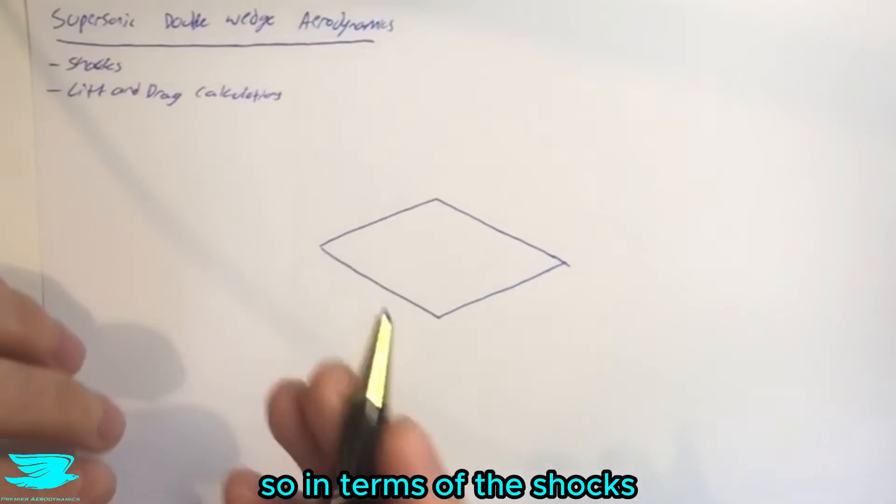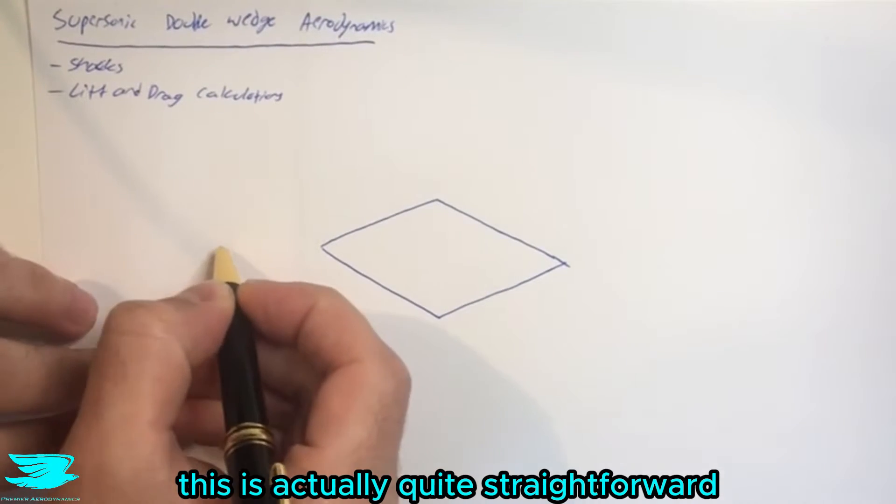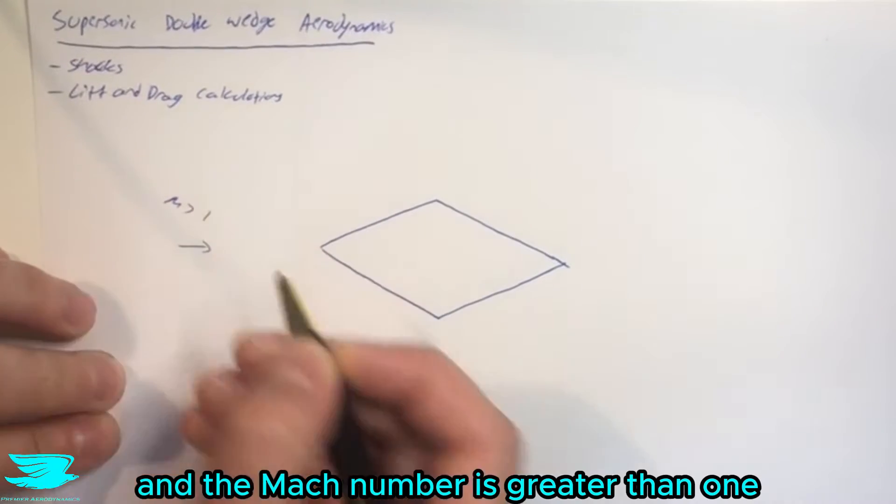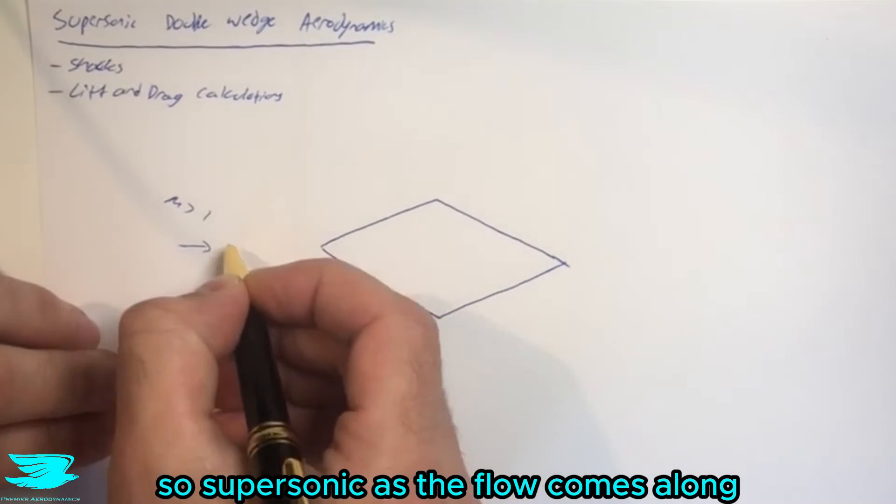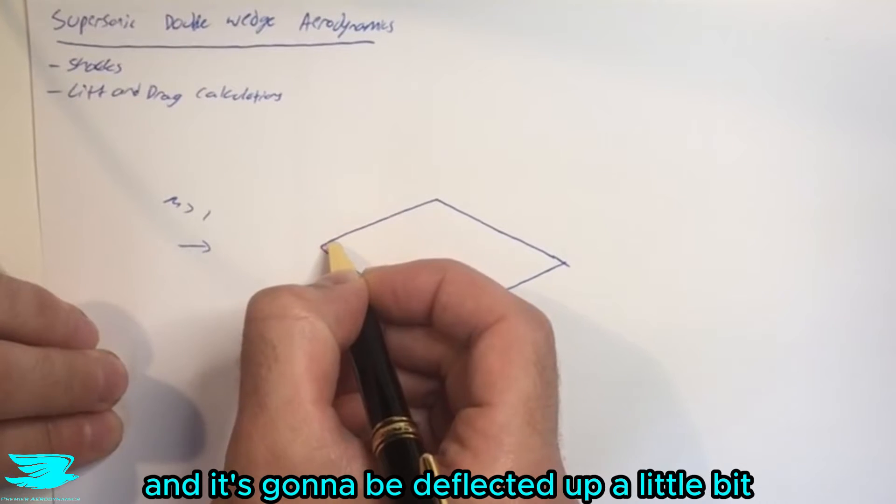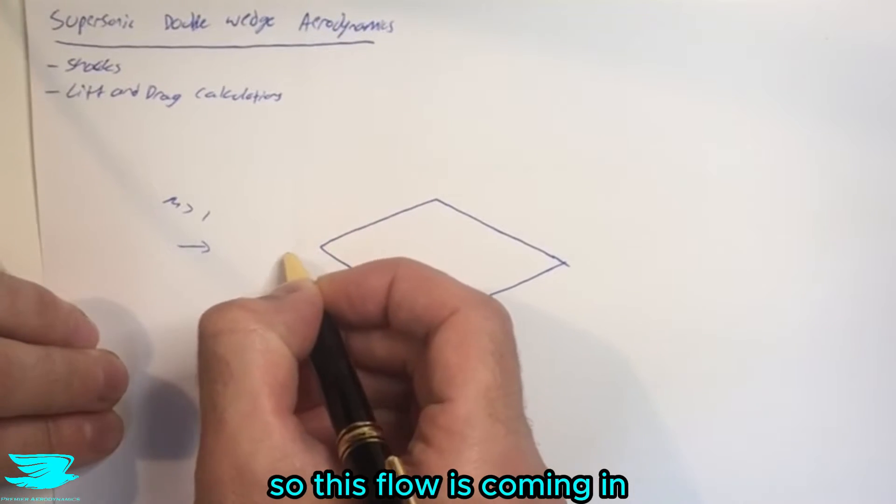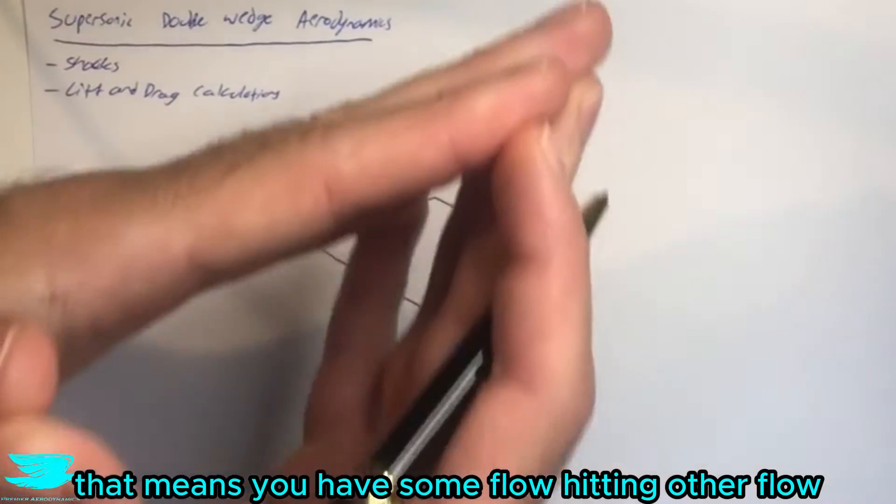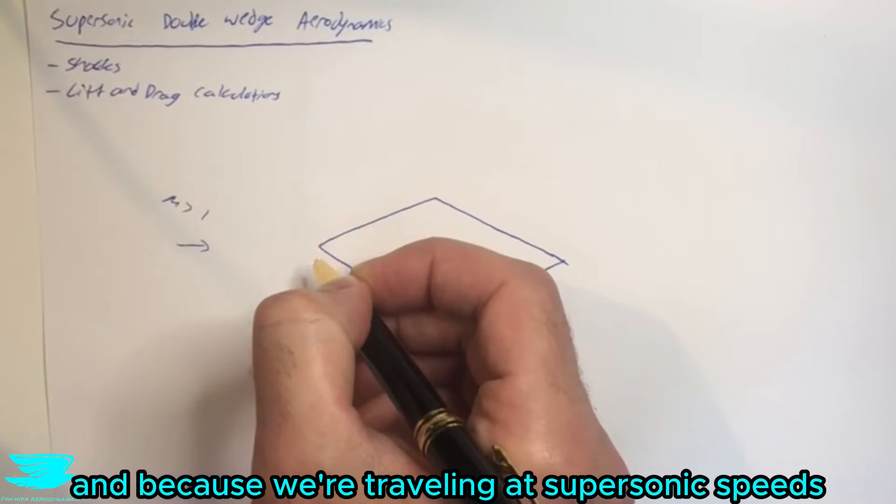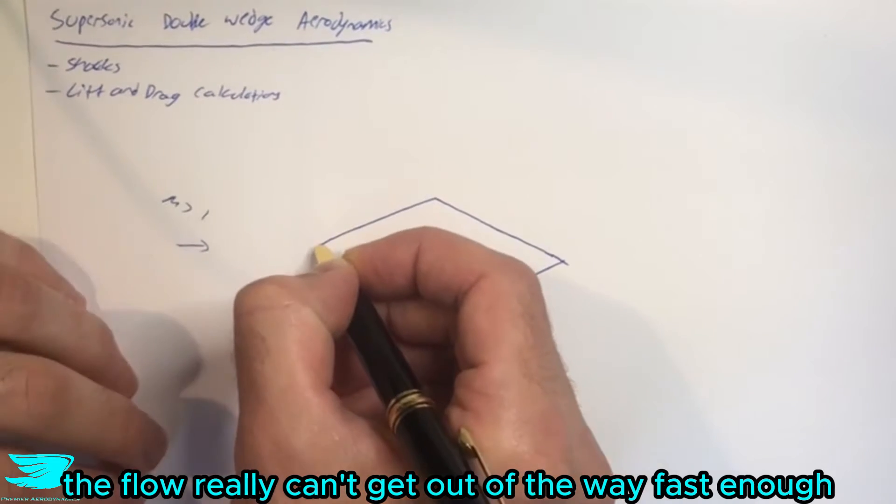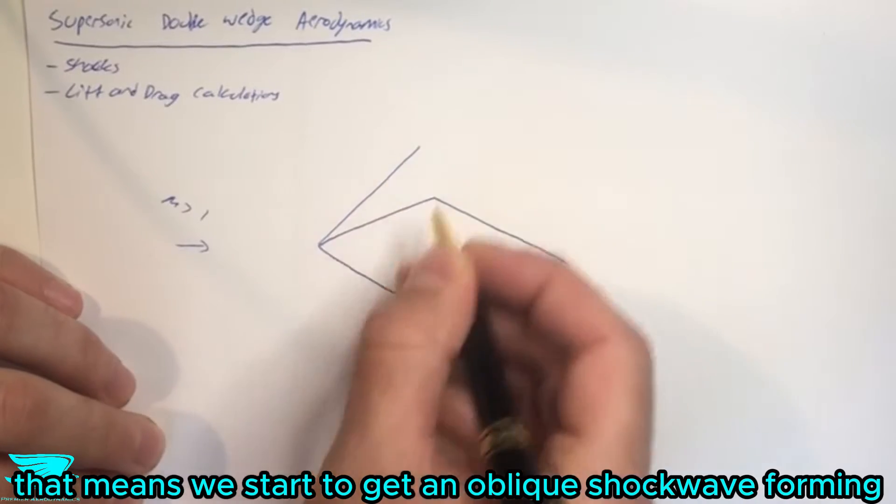In terms of the shocks, this is actually quite straightforward. Let's say we have the flow coming in here, and the Mach number is greater than one, so supersonic. Now as the flow comes along, it's going to hit this front point here and be deflected up a little bit. So this flow that's coming in is going to be deflected this way. That means you're going to have some flow hitting other flow.